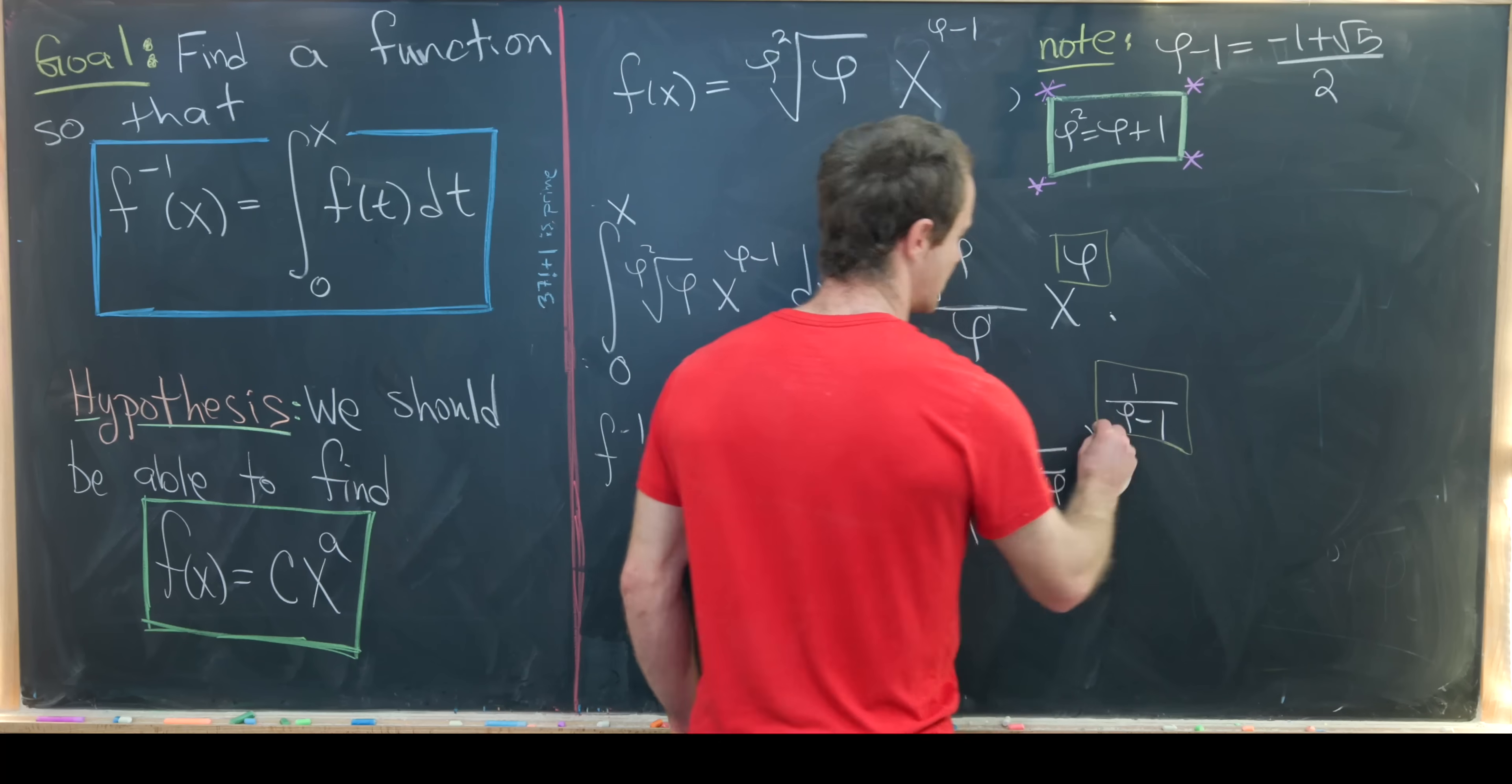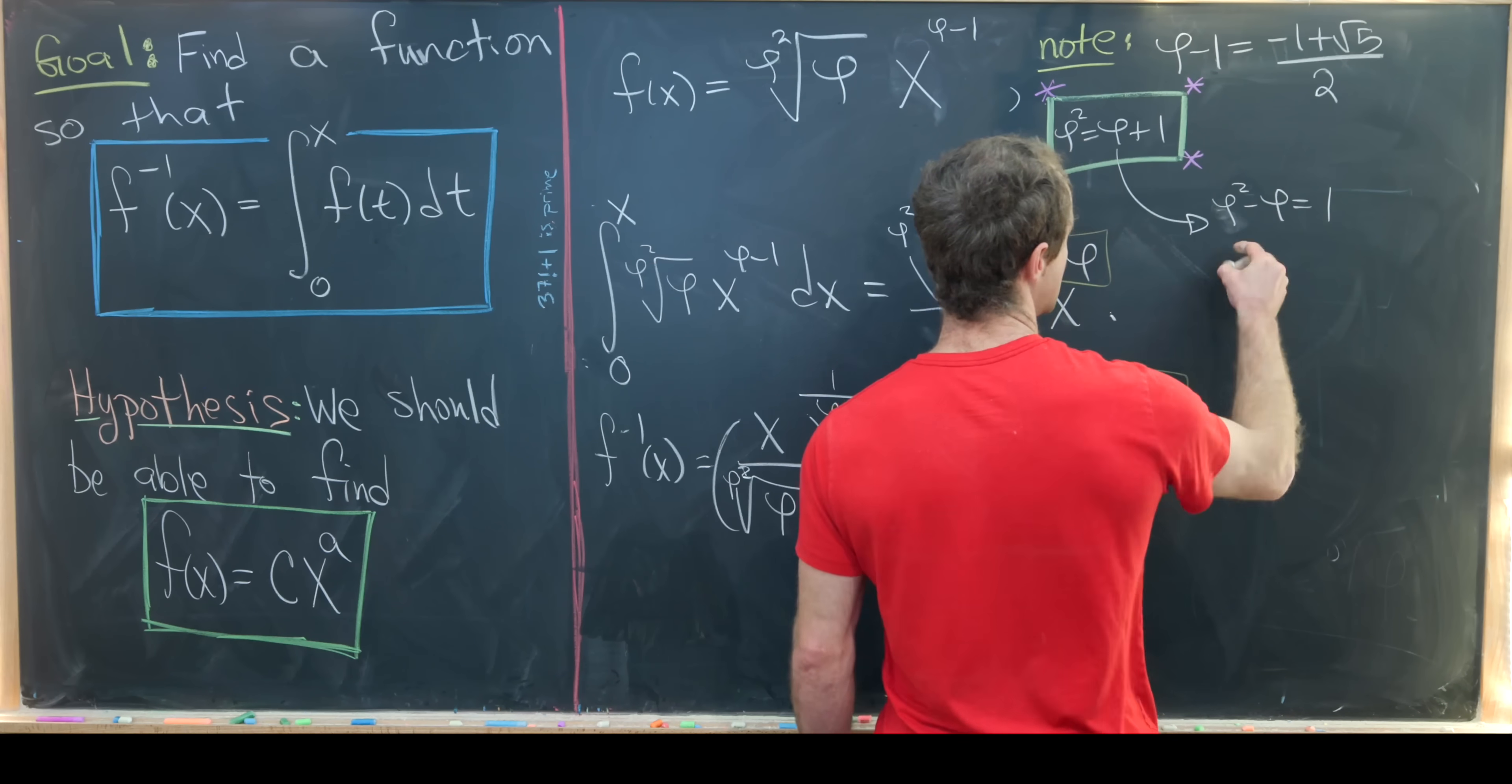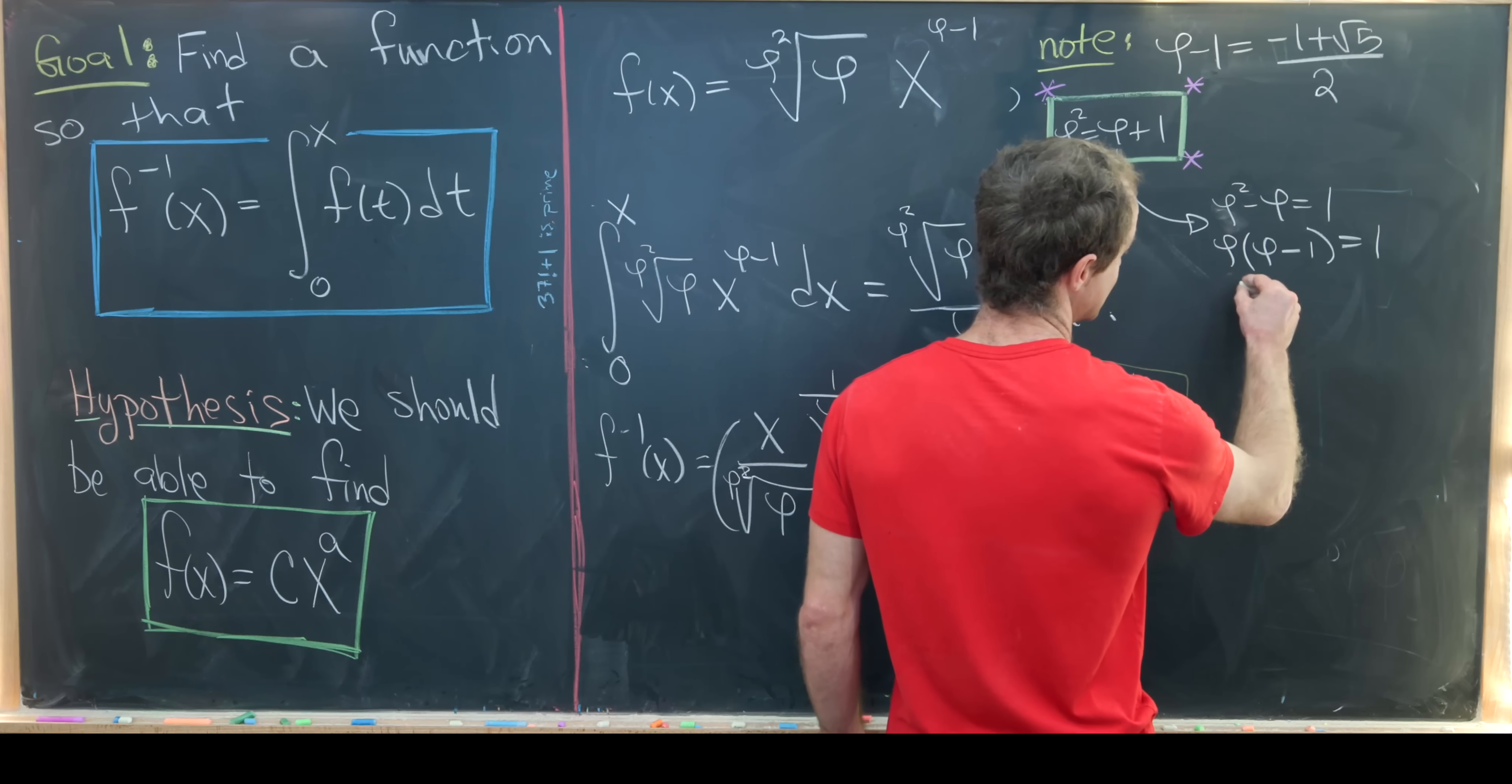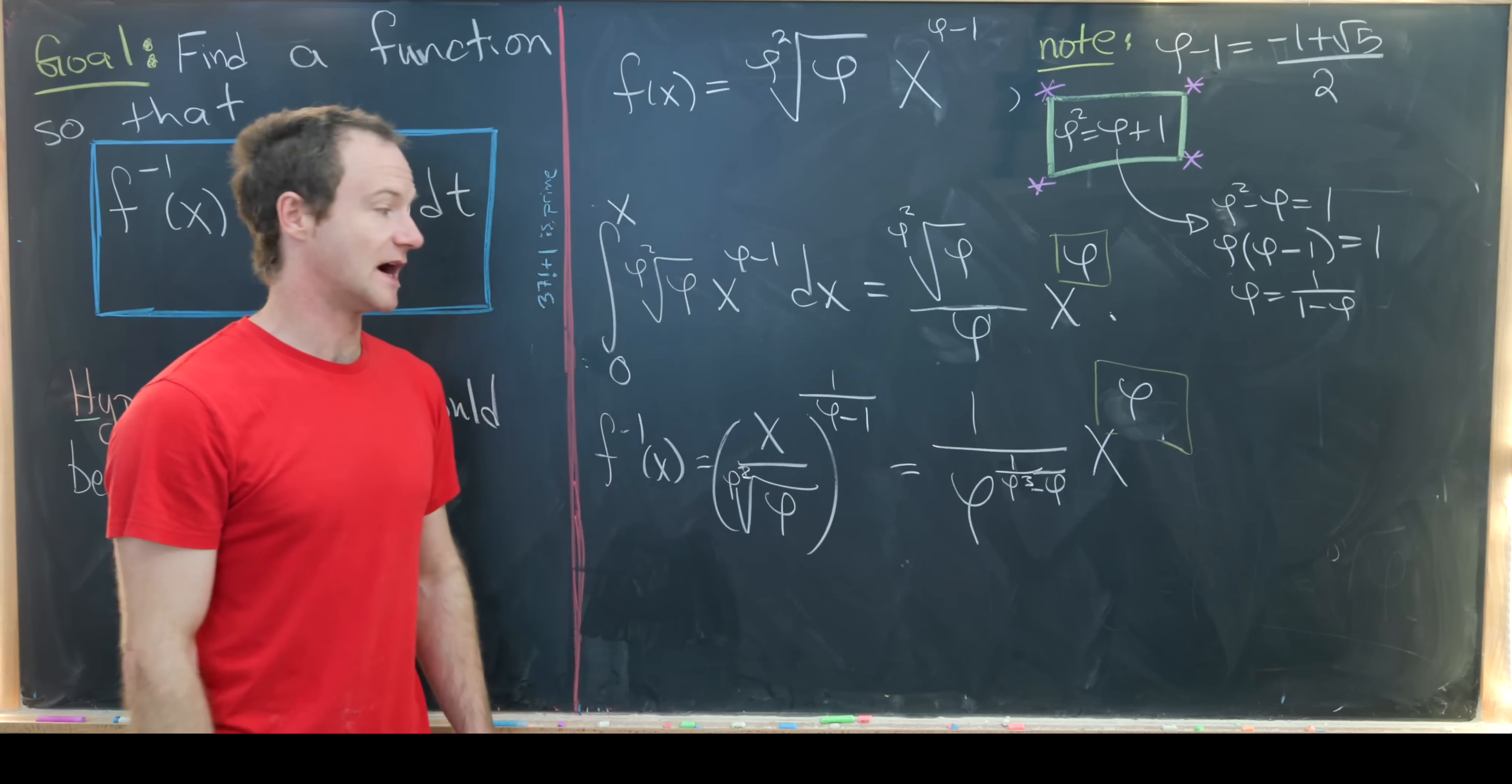Let's talk through why these exponents are equal first. Take this defining property of phi and change it around a little. We can rewrite this as phi squared minus phi equals 1. Factor a phi out: phi times (phi - 1) equals 1. Dividing by (phi - 1) we see that phi equals 1 over (1 - phi). That's good to know. That means we can take this exponent right here, erase what we had and replace it with phi. Now these exponents line up.